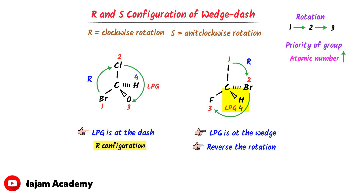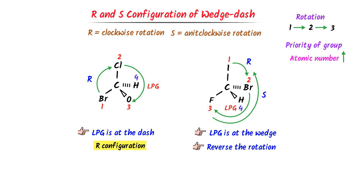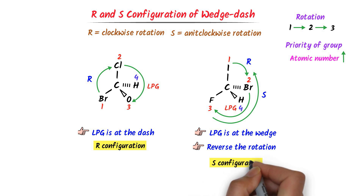So I reverse the direction of this rotation. Now this rotation is anticlockwise rotation. According to the rule, anticlockwise rotation is S configuration. So the configuration of this organic compound is S configuration. Hence, note down this important example.